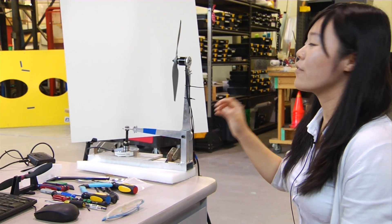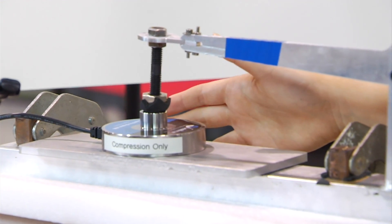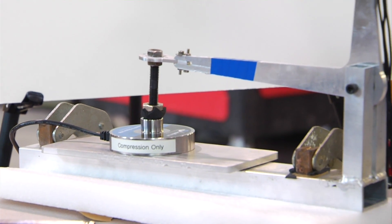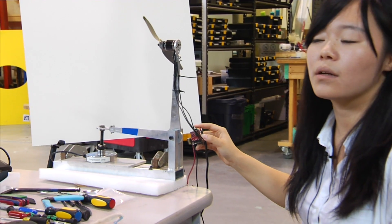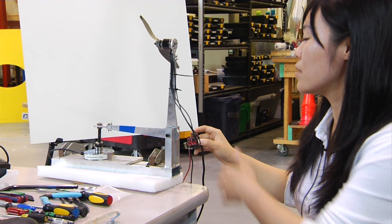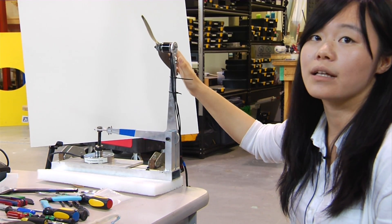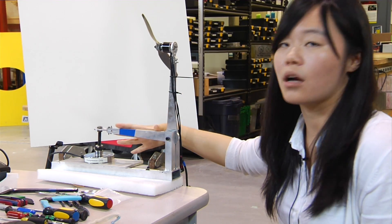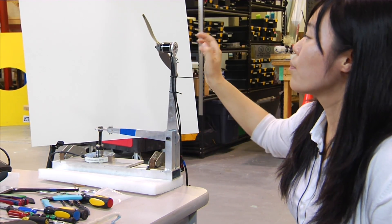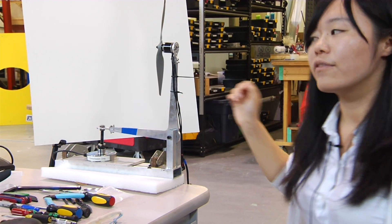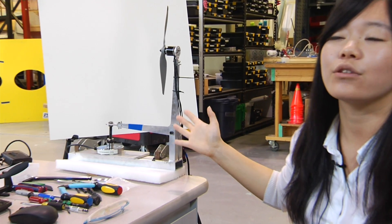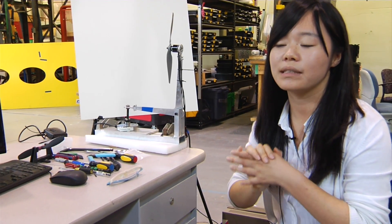This setup consists of two parts. This part is the load cell. We can get the force data from it, and the propeller motor and speed controller. We can get the current and voltage of the motor and the velocity of the propeller from it. Because this arm's length is equal to this arm, when the propeller rotates, the thrust from here is equal to the force from here. And using this setup, we can do some static model, static test.